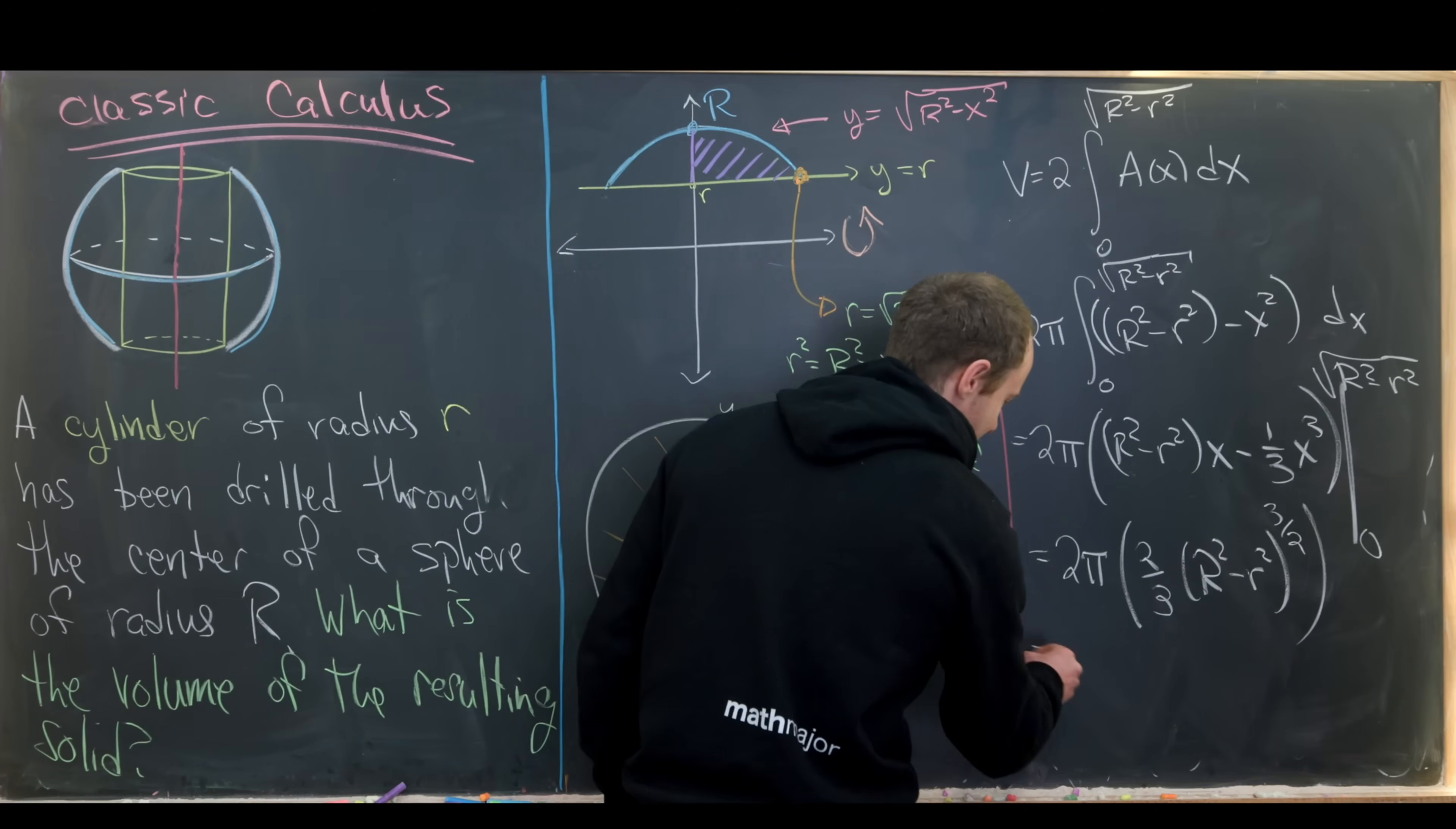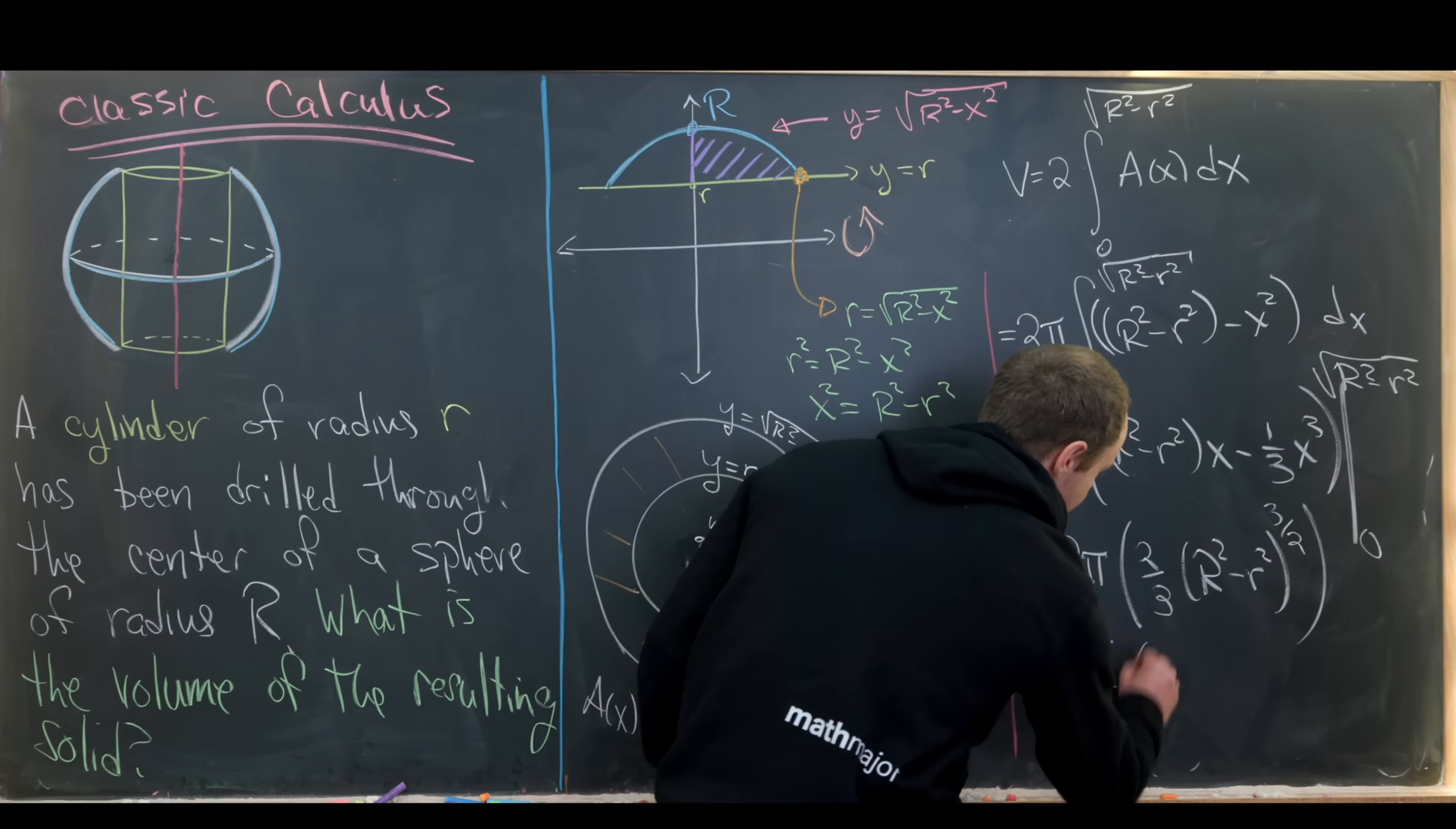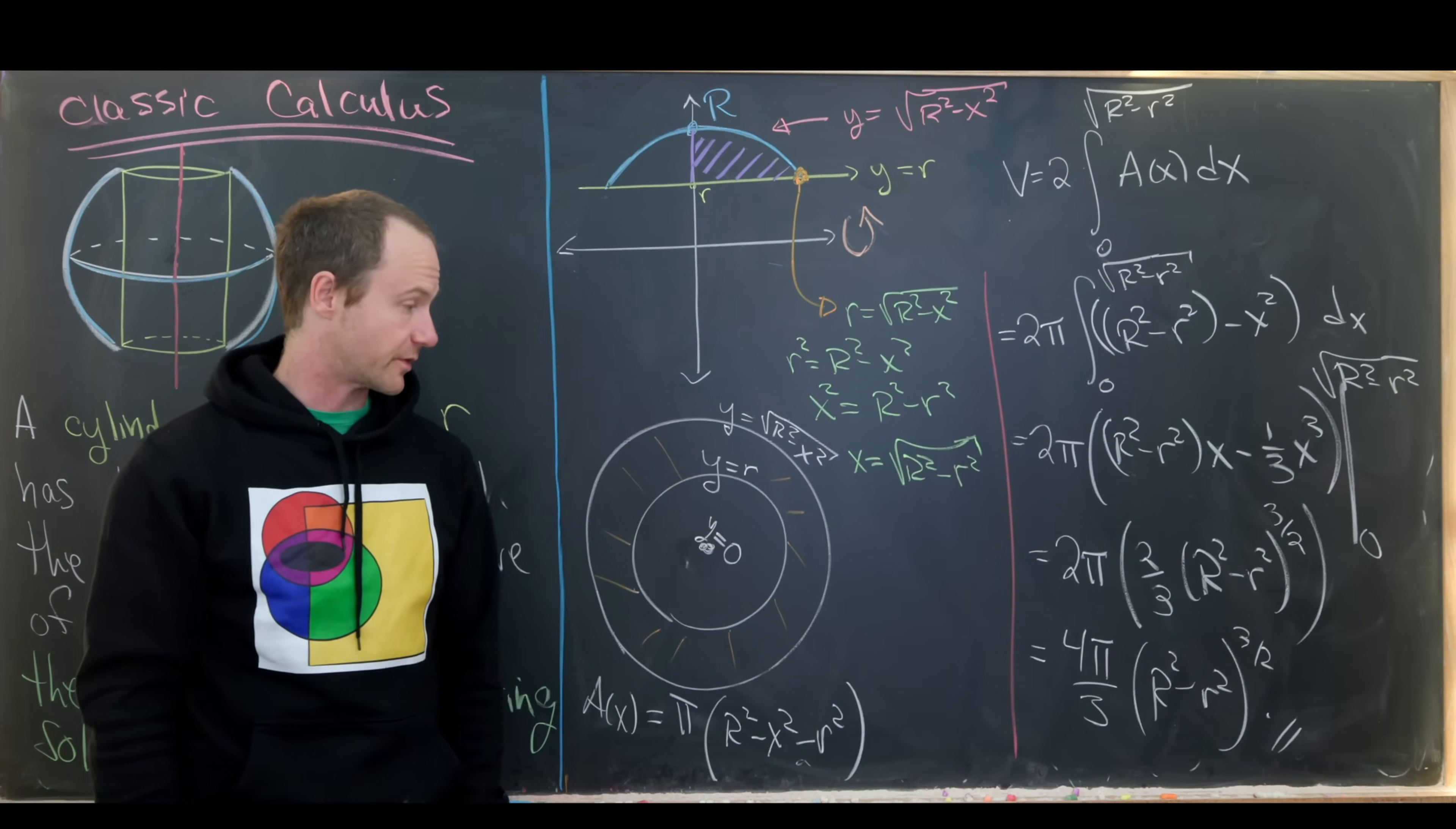Okay. Then we can maybe simplify this a little bit. This would be four pi over three times capital R squared minus little r squared to the three halves. And that's our final volume.